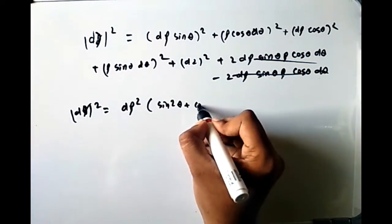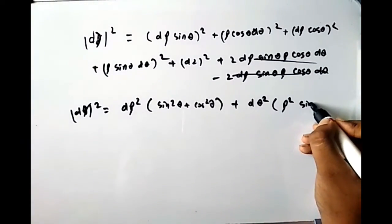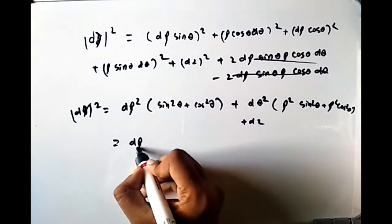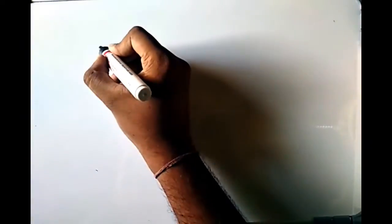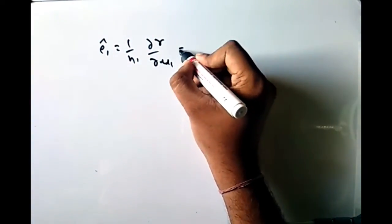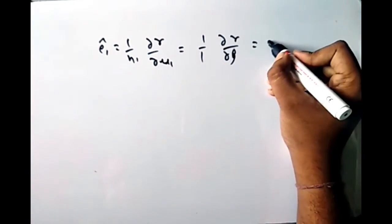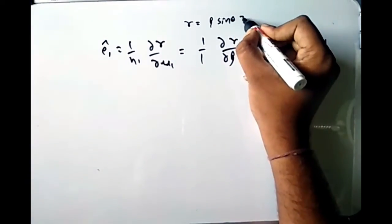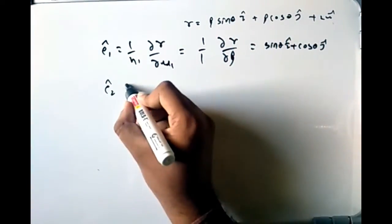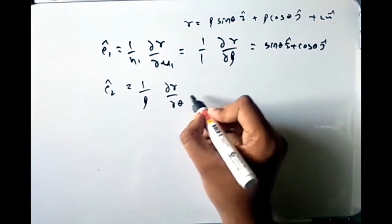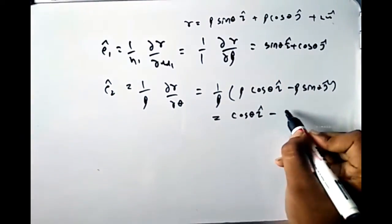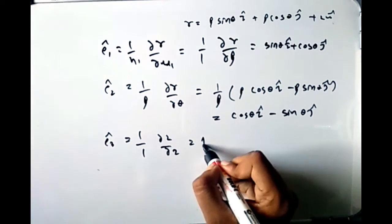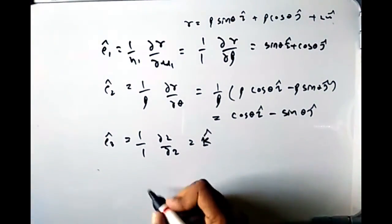Comparing with h₁² du₁² + h₂² du₂² + h₃² du₃², we identify h₁ = 1 (for u₁ = ρ), h₂ = ρ (for u₂ = θ), and h₃ = 1 (for u₃ = z). The unit vectors are: ê₁ = (1/h₁)(∂r/∂ρ) = sin θ î + cos θ ĵ; ê₂ = (1/h₂)(∂r/∂θ) = (1/ρ)(ρ cos θ î − ρ sin θ ĵ) = cos θ î − sin θ ĵ; and ê₃ = (1/h₃)(∂r/∂z) = k̂.